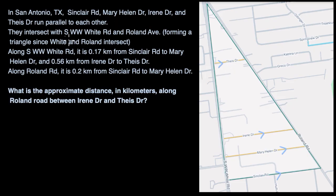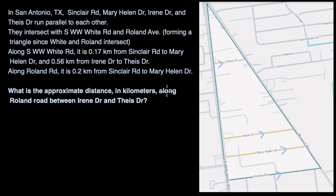They intersect South W.W. White Road — this is South W.W. White Road — and Roland Ave, right over there, forming a triangle since White and Roland intersect. So I can see the triangles that each of these parallel roads form with those other two roads.